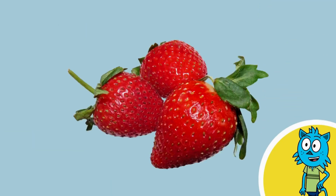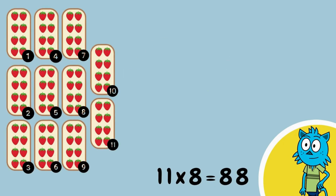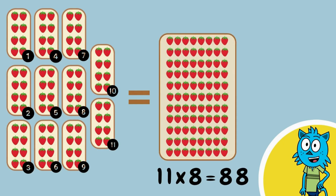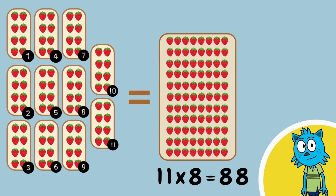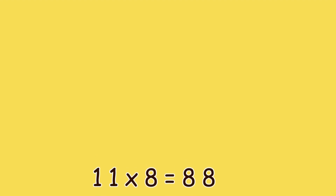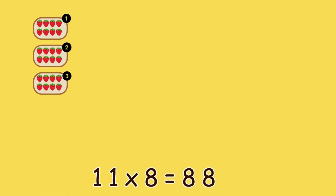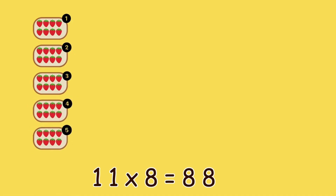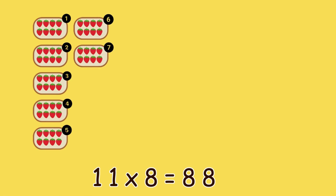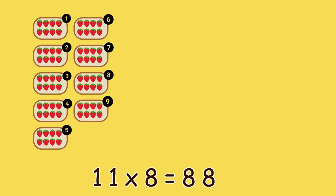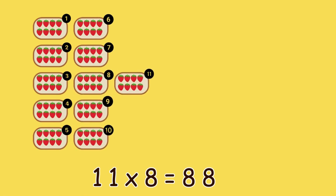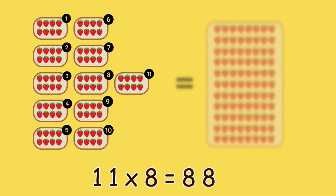Let's move on to strawberries. Eleven groups of eight strawberries equals eighty-eight strawberries. Eleven times eight — one, two, three, four, five, six, seven, eight, nine, ten, eleven — is eighty-eight.